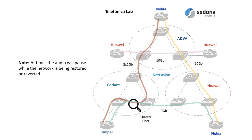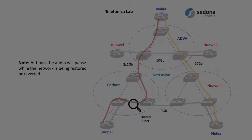This diagram represents the multi-layer, multi-vendor network environment in Telefonica's lab. The IP MPLS layer consists of Nokia, Juniper, and Huawei routers. The colored lines represent a 2x1 gigabit per second IP link bundle and three 10 gigabit per second IP links. The optical layer consists of ADVA, Coriant, and Huawei optical network elements, where each is in a different optical domain.